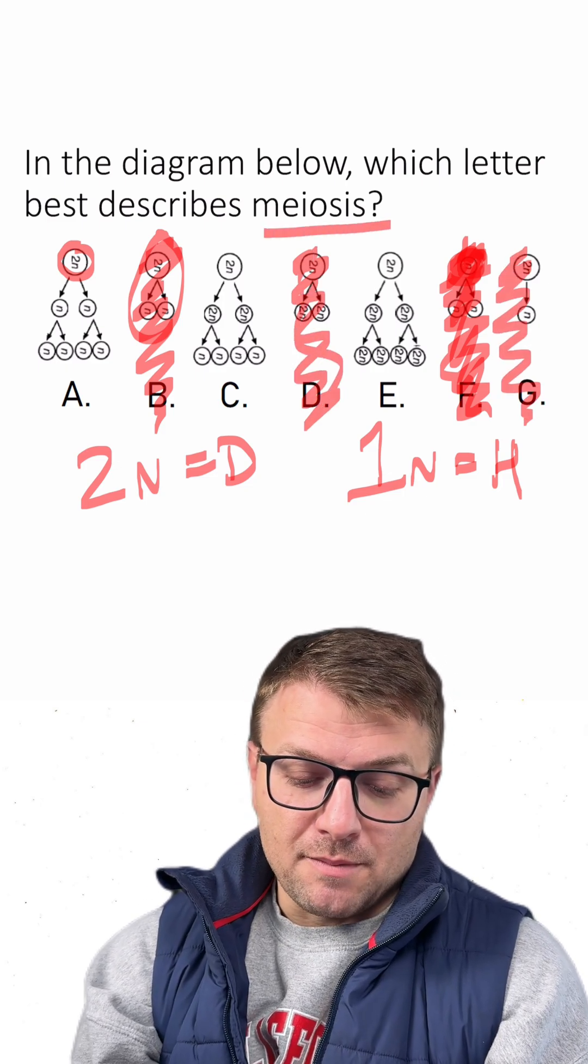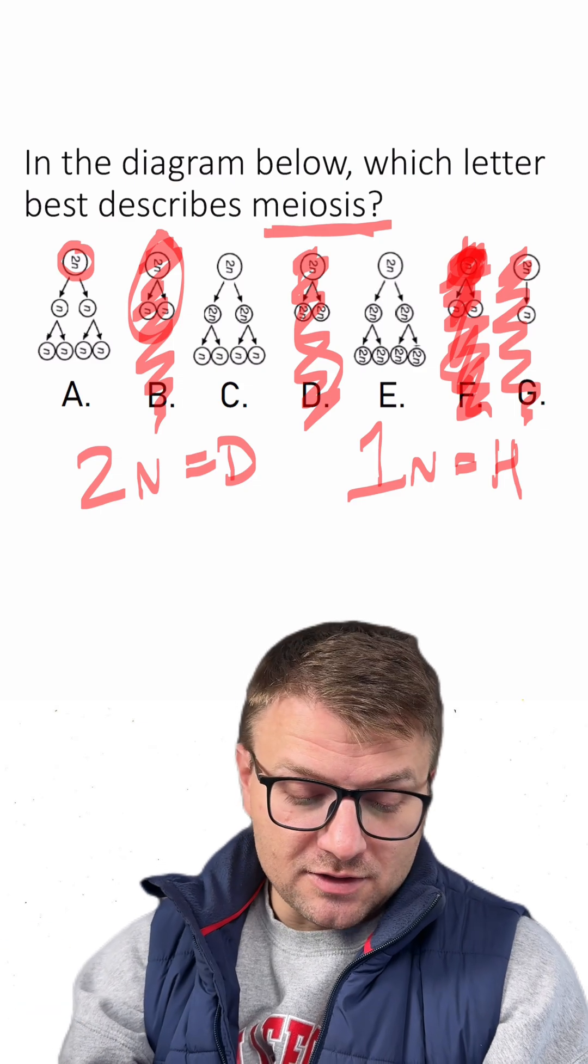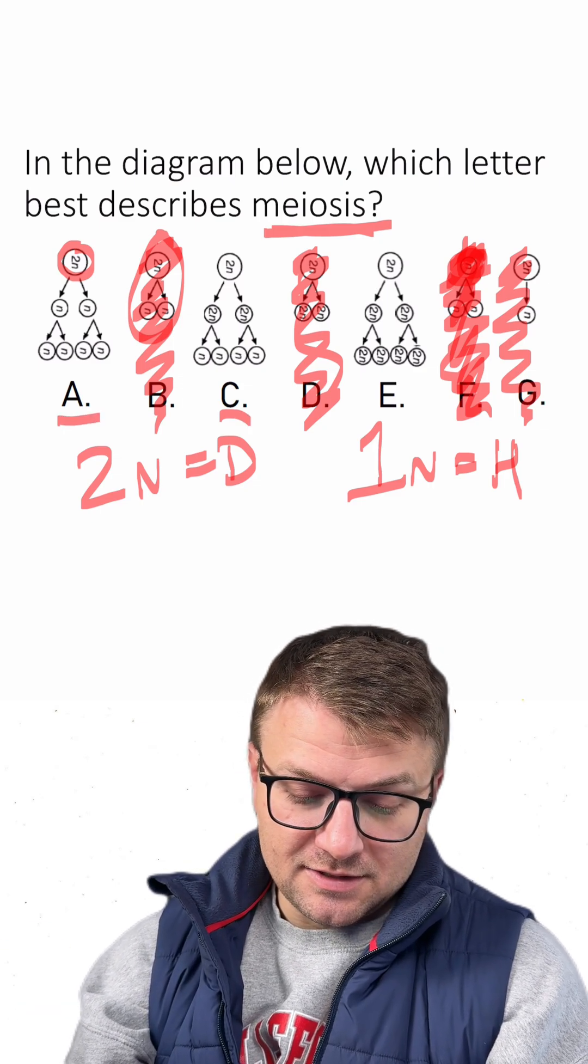Since we're talking about meiosis, we're going through two rounds of division. So we're left with A, C, and E.